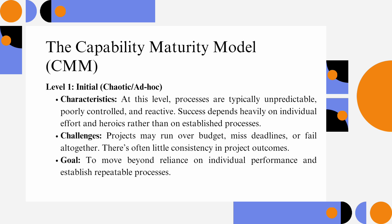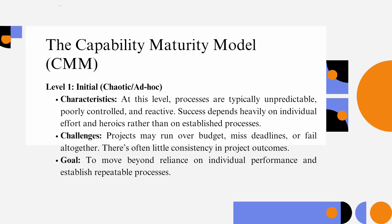At Level 1, processes are typically unpredictable, poorly controlled, and reactive. Success depends heavily on individual effort and heroics rather than on established processes. Projects may run over budget, miss deadlines, or fail altogether, and there is often little consistency in project outcomes. The goal is to move beyond reliance on individual performance and establish repeatable processes.